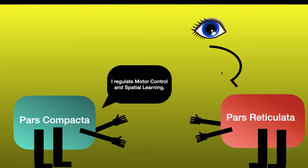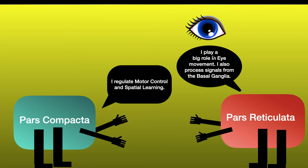The pars reticulata plays a role in eye movement — specifically eyeball movement. Our eyes are so small, yet we get a panoramic view of our world because our eyeballs are moving very fast, taking in signals from every part of what they can see. The pars reticulata plays a small role in that eye movement, and also processes signals from the basal ganglia.